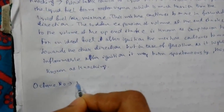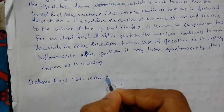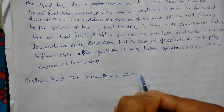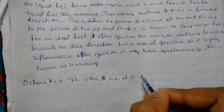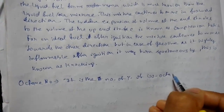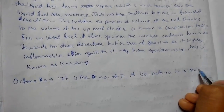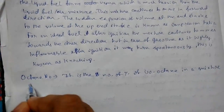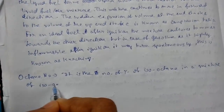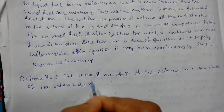Next we will see the octane number. It is the percentage of isooctane in a mixture of isooctane and a reference compound.